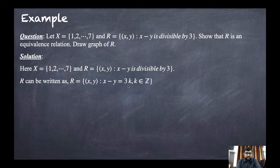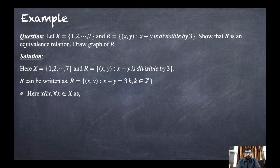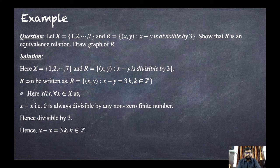The relation x minus y is divisible by 3 can be rewritten as x minus y equals 3k, where k belongs to the set of integers — meaning x minus y is a multiple of 3. For reflexivity, x minus x equals zero, and zero is divisible by any nonzero finite number, including 3. So x minus x equals 3 times 0, where k equals 0, confirming x is related to x. Hence R is reflexive.